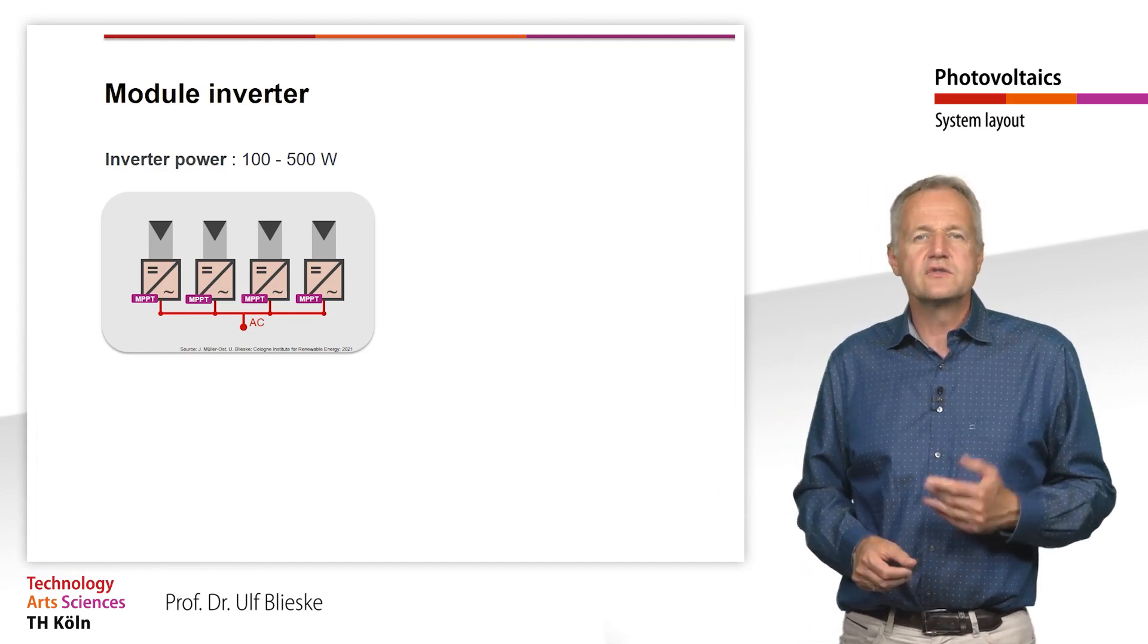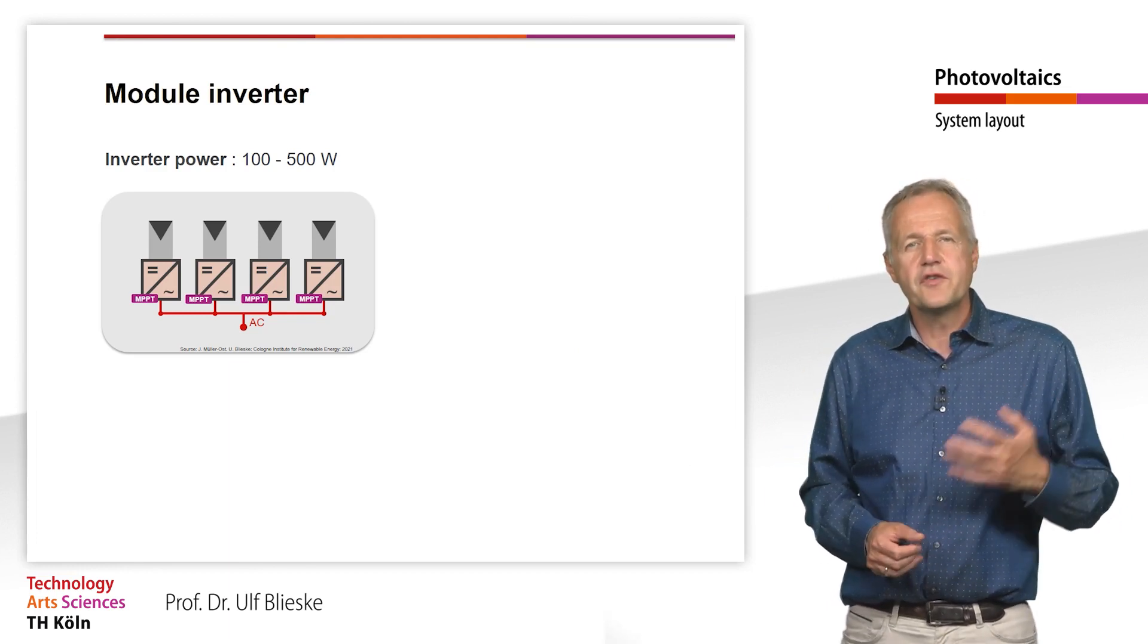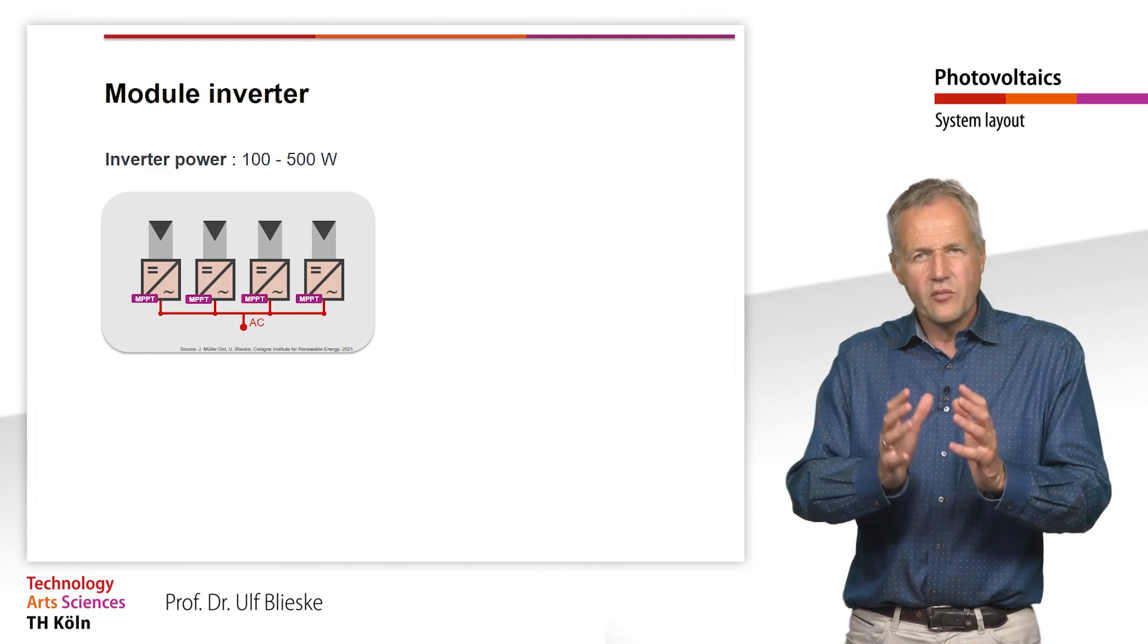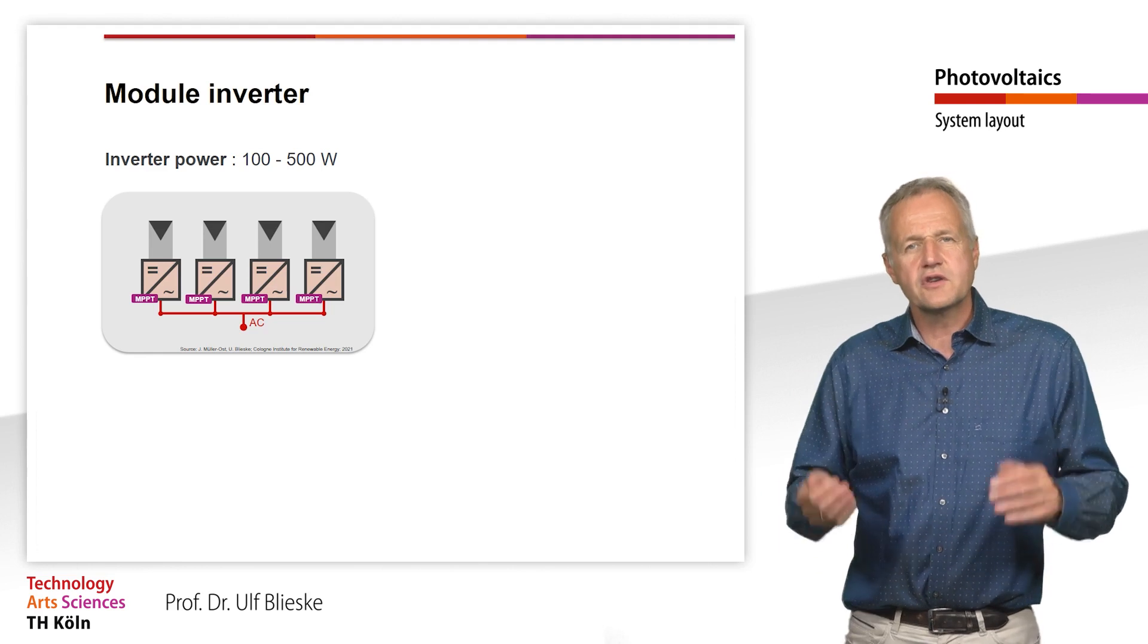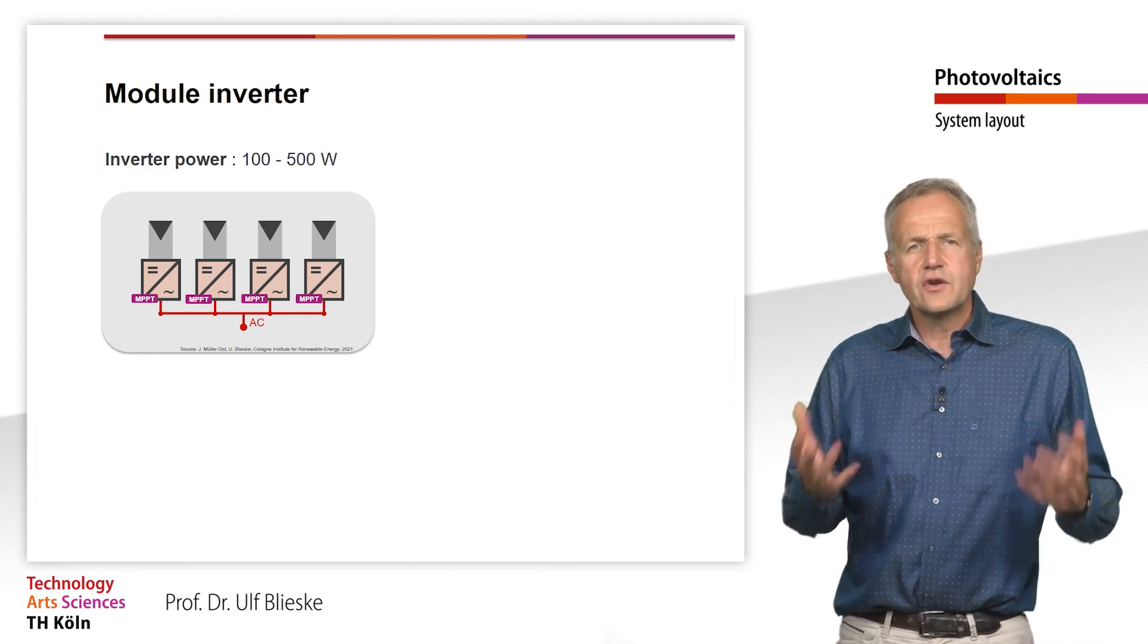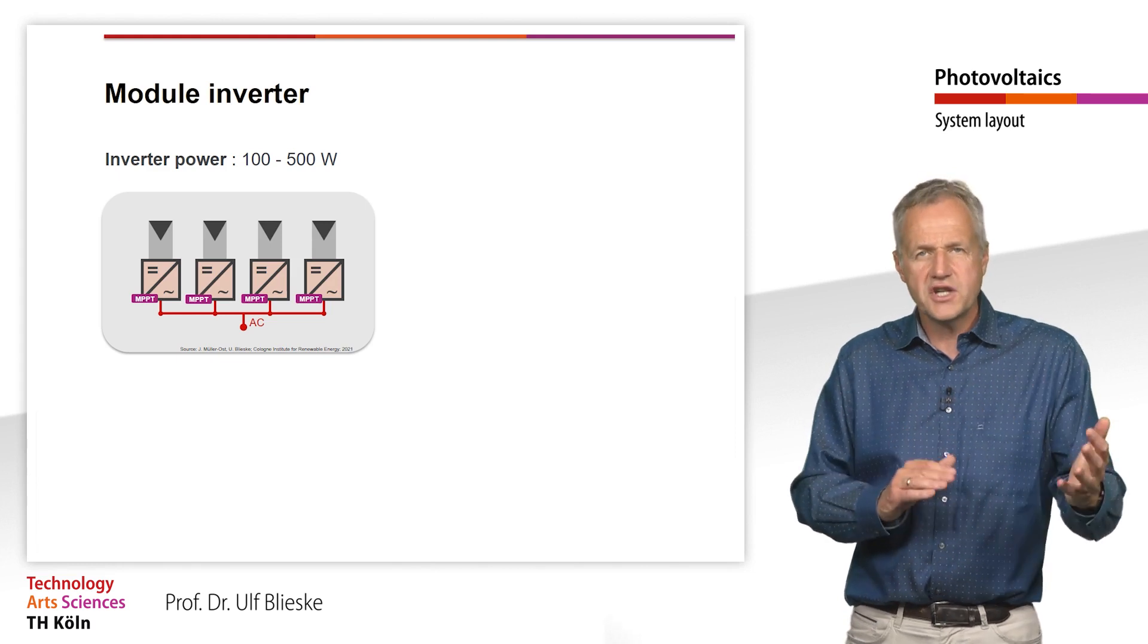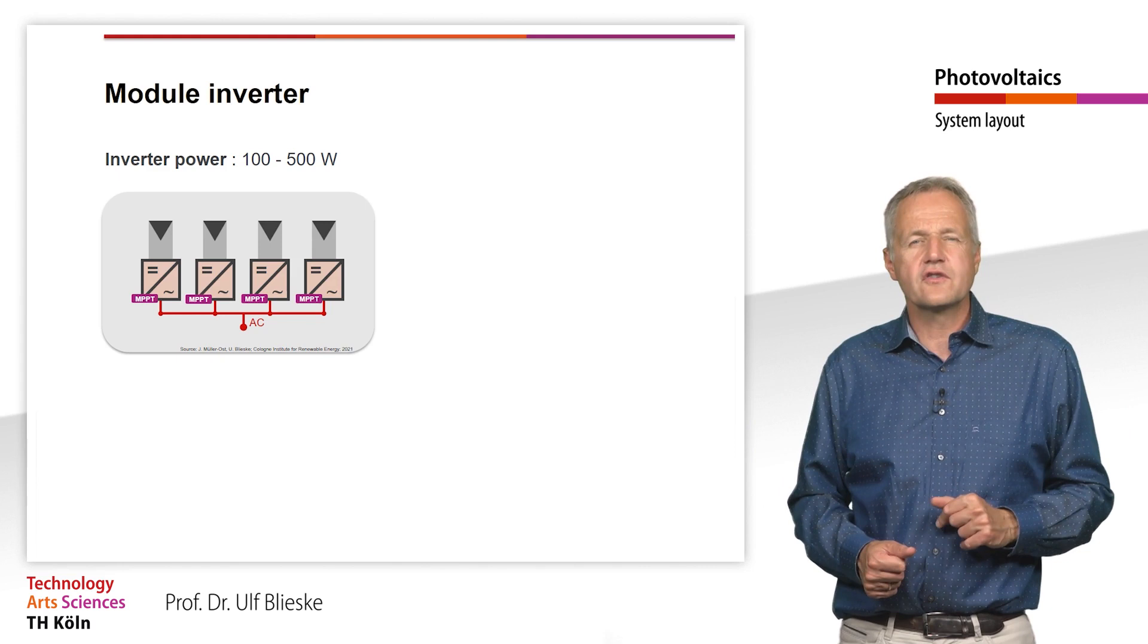Module inverters typically have power ratings of a few hundred watts and are connected to a single module at a time. They are relatively small devices, similar in size to a module's junction box. They are usually mounted on the back of the modules. Because each module has its own inverter, each module is always operated at its maximum power, regardless of the orientation or possible shading of the other modules. Thus, no mismatch losses occur in the system.